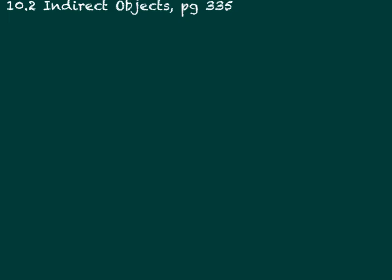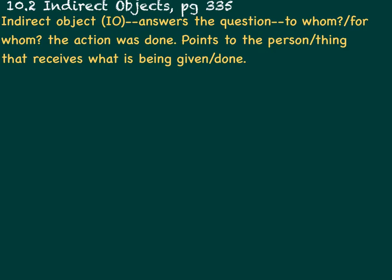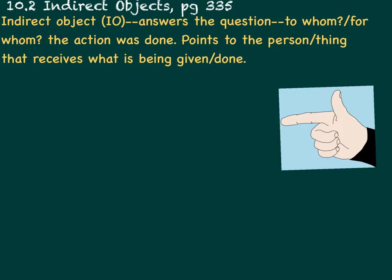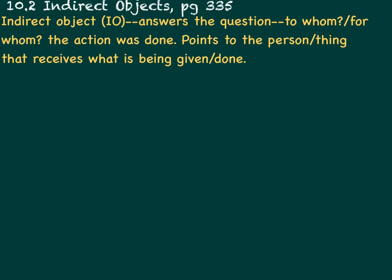Please label your notebook 10.2 indirect objects, page 335. An indirect object answers the question to whom or for whom the action was done. It points to the person or thing that receives what is being given or done.